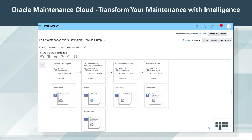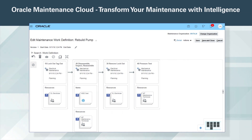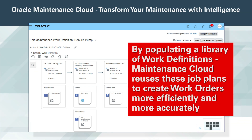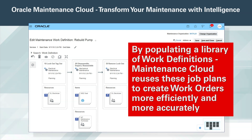The work definition provides a guided repair and defines both labor and material requirements. By populating a library of work definitions, Maintenance Cloud reuses these job plans to create work orders more efficiently and more accurately.